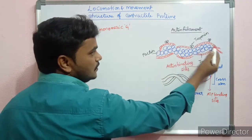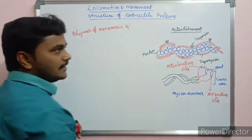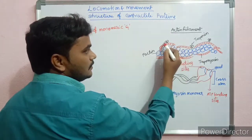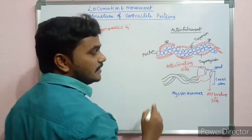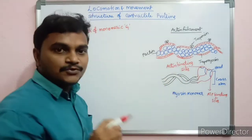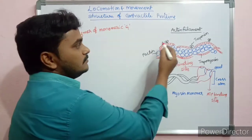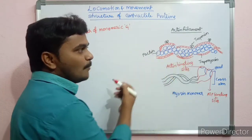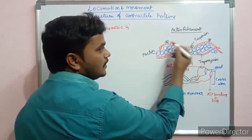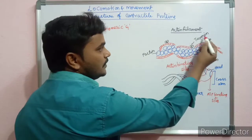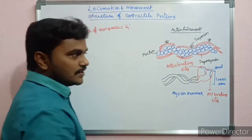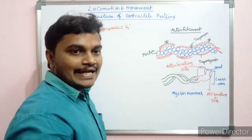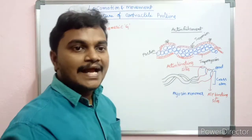Tropomyosin is one component of the actin filament. On the tropomyosin, there are troponin subunits that are scattered along the tropomyosin strand.